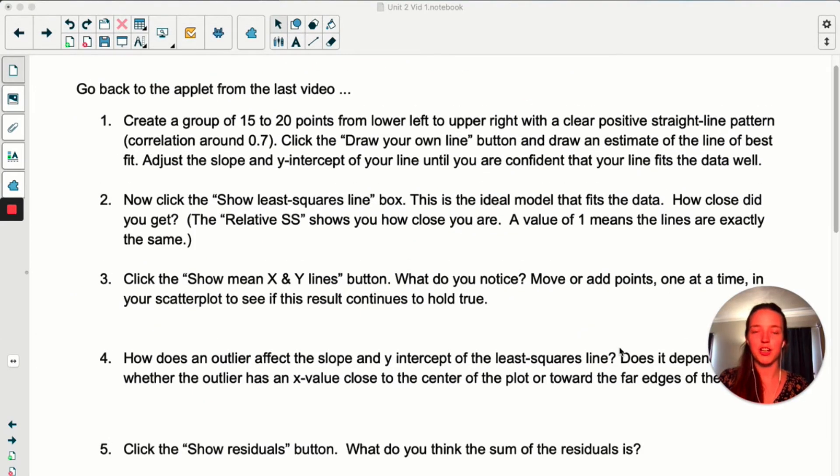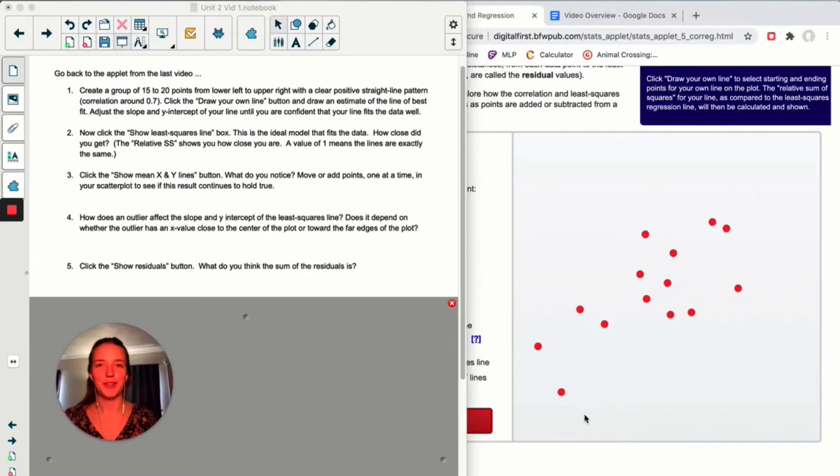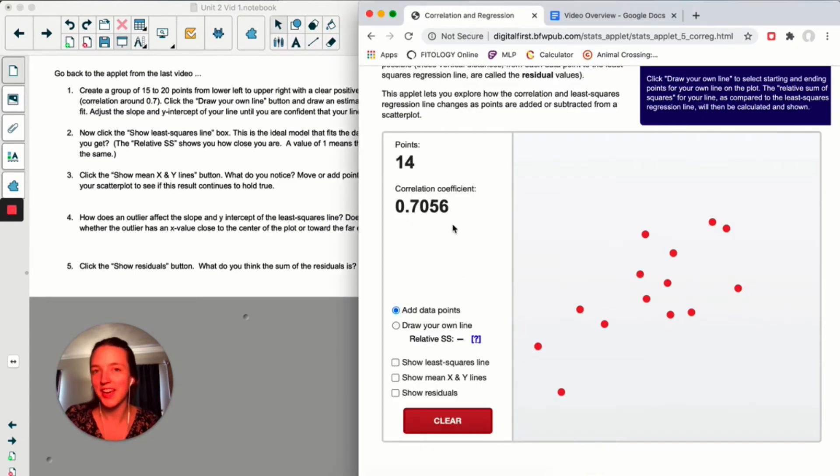Okay, so for the next part, you're going to go back to the applet from the last video. I will update the notes so that it's actually linked right here. And I want you to follow the directions for one through five. Pause the video, do that, and then come back and we'll do a quick recap. All right, so here we go. I've got about 15 points. The correlation is almost exactly at point seven zero. Okay, so when I draw my own line, I'd maybe say like that.